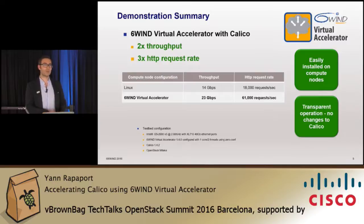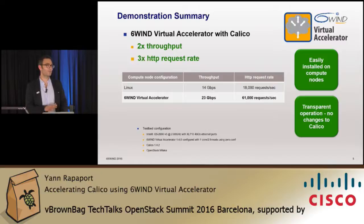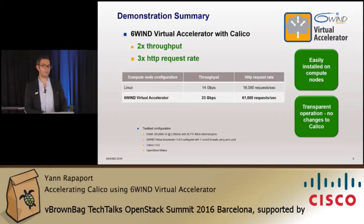With Virtual Accelerator on one core versus Linux running on all cores, we see two times the throughput performance for VM-to-VM communication and three times the HTTP request rate.